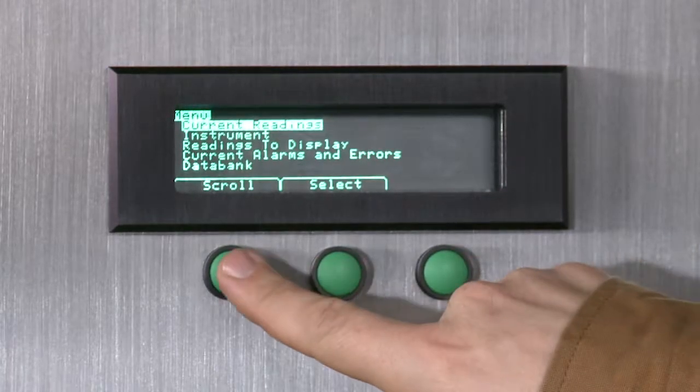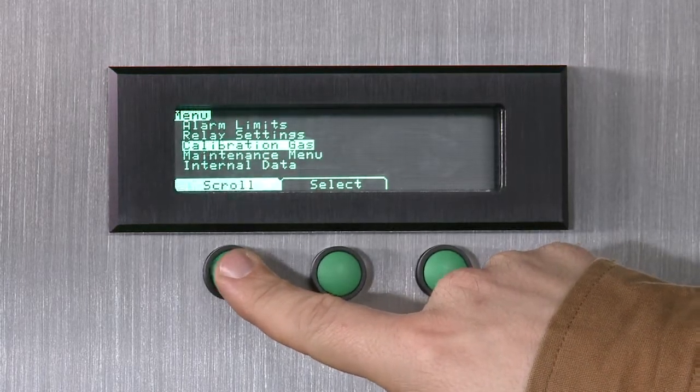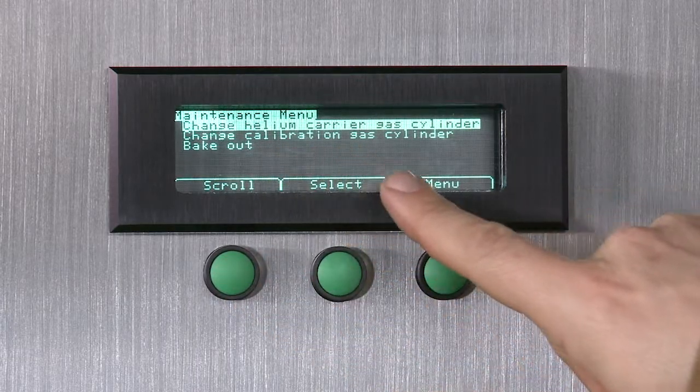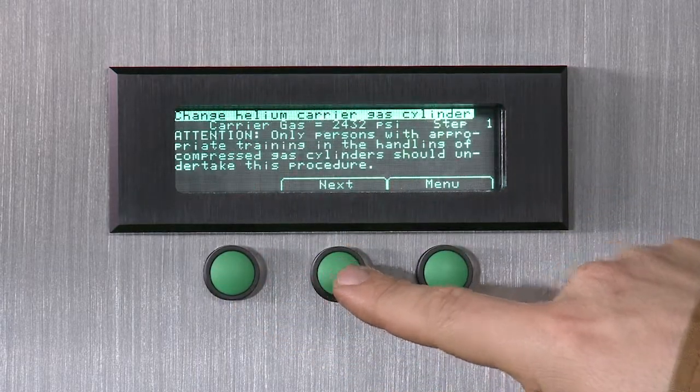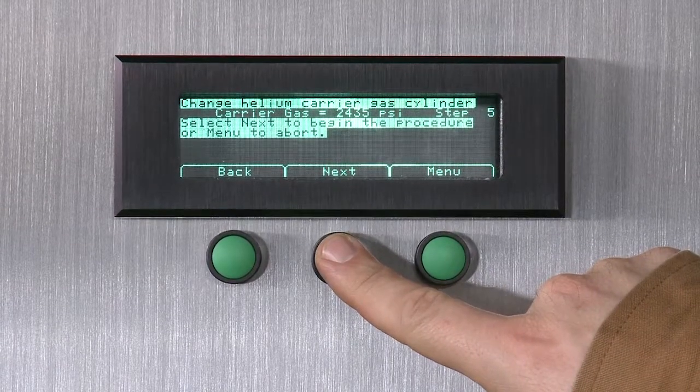Once the display menu is illuminated, navigate to the Maintenance menu and select Change Helium Carrier gas. Read the on-screen information and press Next. Press Next to begin the procedure.